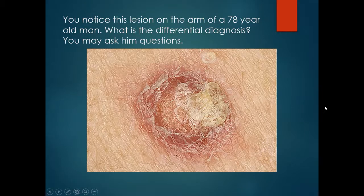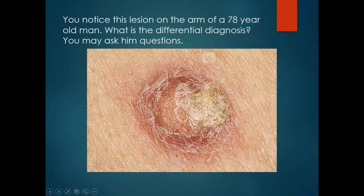You notice this lesion on the arm of a 78 year old man. What is the differential diagnosis? Here we have an erythematous nodule with surface keratosis. This would lead you to the diagnosis of either a squamous cell carcinoma or squamous cell carcinoma in situ.